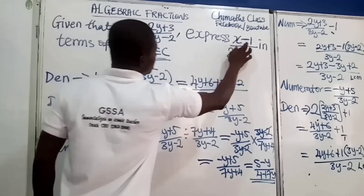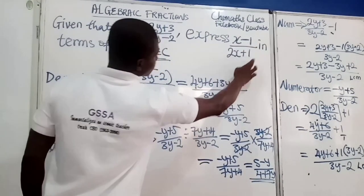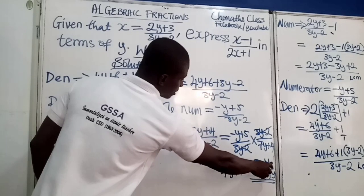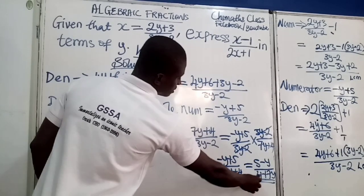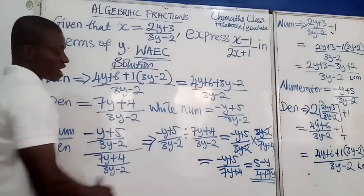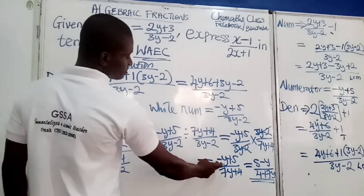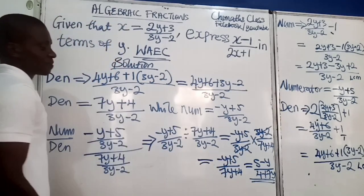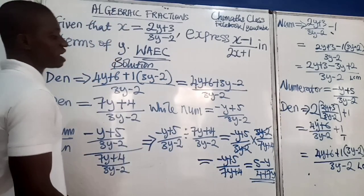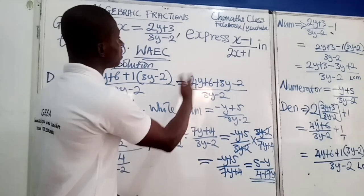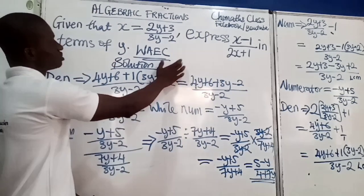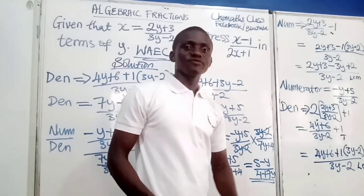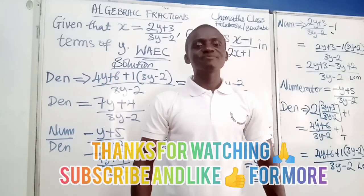Therefore, expressing x minus y divided by 2x plus y in terms of y, we get 5 minus y divided by 4 plus 7y, which can also be written as minus y plus 5 divided by 7y plus 4. That is just how to solve problems on substitution and fractions. Thank you very much for watching.